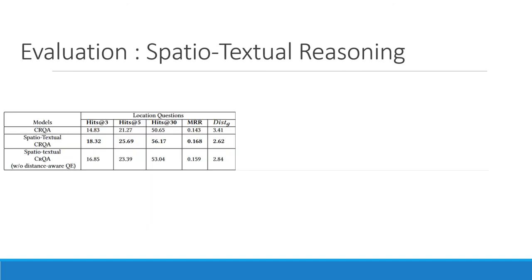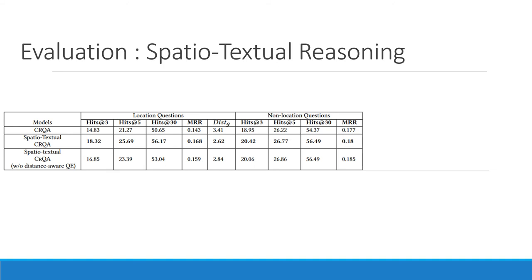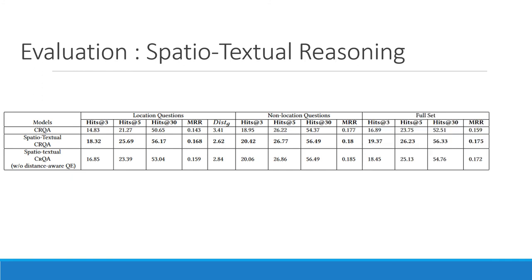We also study performance on questions that have location mentions — referred to as location questions — and those that do not, referred to as non-location questions. In both cases, the spatial-textual CRQA model outperforms textual reasoning. We also study the importance of distance-aware question encoding and find it is important for both location and non-location questions, though as expected, the benefit is higher for location questions. The results follow the same trend on the full set.